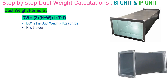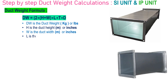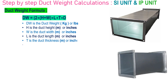DW is the duct weight in kg or pounds. H is the duct height in millimeters or inches. W is the duct width in millimeters or inches. L is the duct length in millimeters or inches. D is the duct density in kg per cubic meter or pounds per cubic inch.